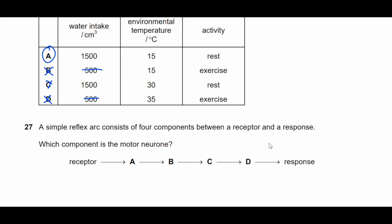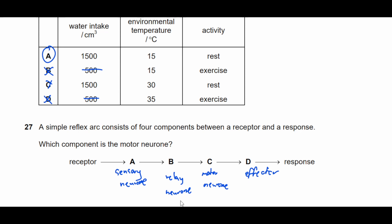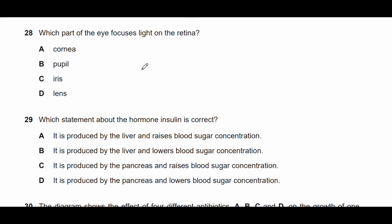Question twenty-seven: a simple reflex arc has four components between receptor and response. Which component is the motor neuron? The order is: receptor → sensory neuron → relay neuron → motor neuron → effector → response. The sensory neuron sends the signal to the relay neuron in the spinal cord, which passes it to the motor neuron. The motor neuron signals the effector — a muscle or gland. Therefore the motor neuron is C.